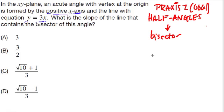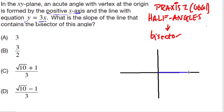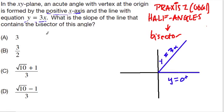We're going to break this problem down. We have the XY-plane—here's Y, here's X—and we have an acute angle with vertex at the origin. It's formed by the positive x-axis, this blue part, and the negative x-axis on the other side. The equation for the line y equals 3x looks something like that. This is the positive component of y equals 3x. The bisector is this line right here that splits the total angle in half.